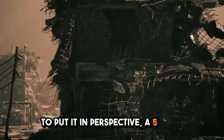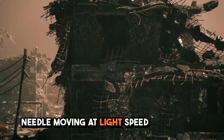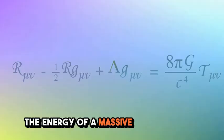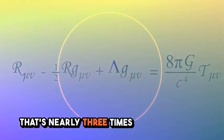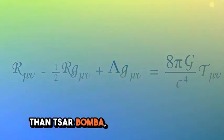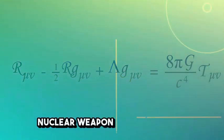To put it in perspective, a 5-gram needle moving at light speed would have the energy of a massive nuclear bomb, about 45 megatons of TNT. That's nearly three times more powerful than Tsar Bomba, the most powerful nuclear weapon ever detonated.